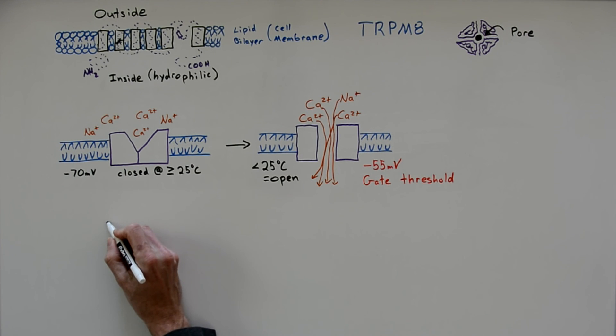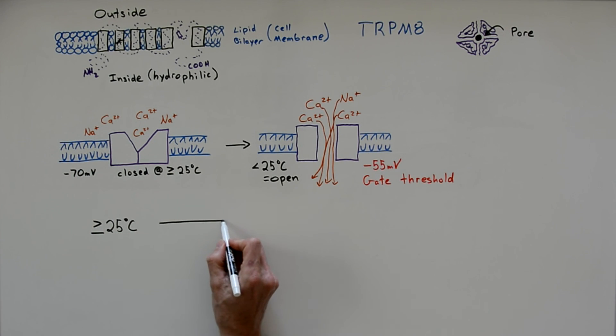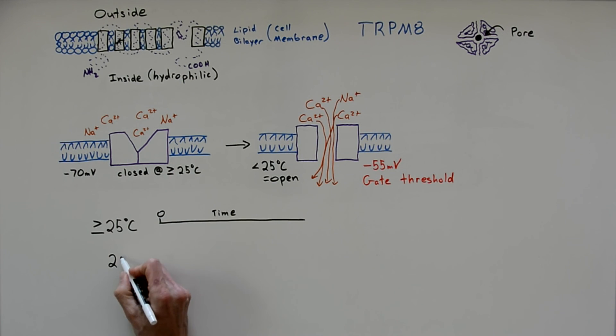Let's focus in on how cold starts action potentials. If we take a normal ambient room temperature, which is 25 degrees, the channel is closed. So all the cations, the calcium 2 plus and the sodium plus, they're all remaining outside the neuron and are unable to get inside. And inside the neuron, the resting potential is minus 70 millivolts.